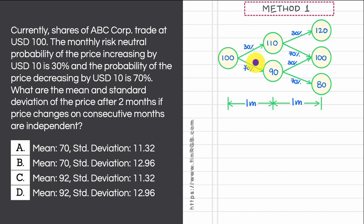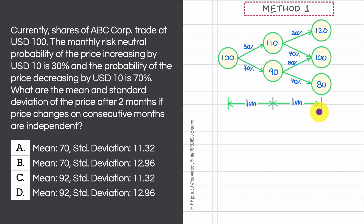If you take this information and build a tree showing how the share price evolves over time, your tree would look something like this. This tree has been drawn for a total period of two months. What it shows is that at the end of two months, the share price of ABC Corp can take one of three possible values.